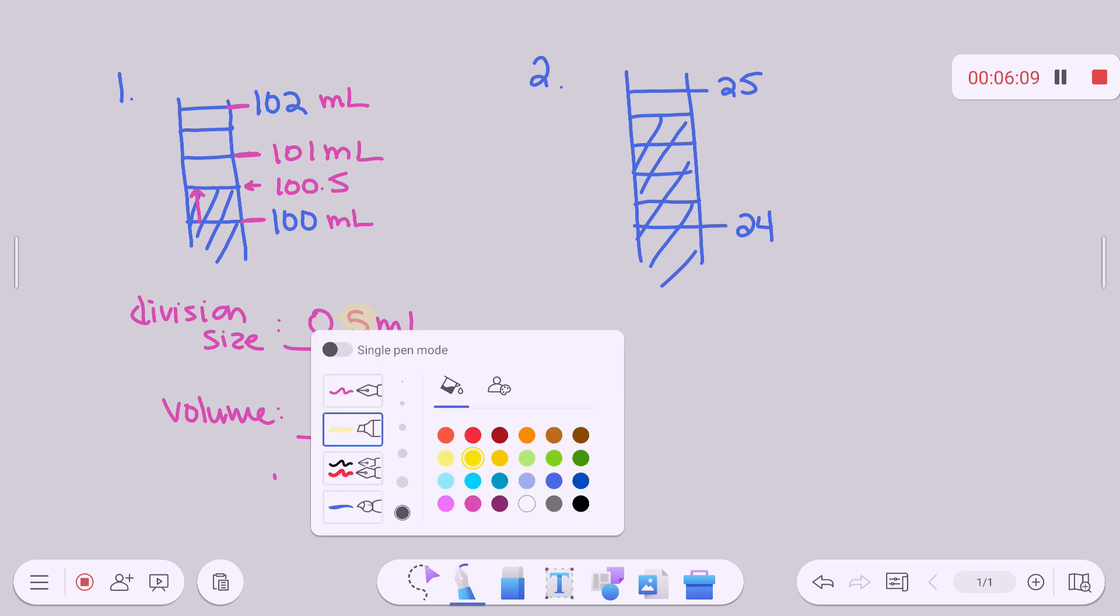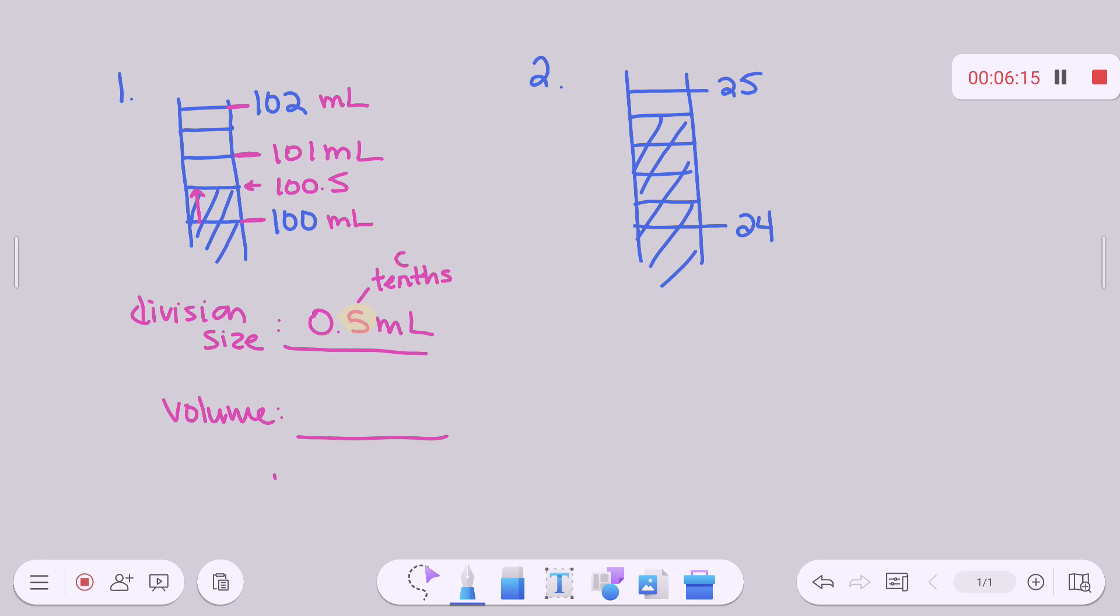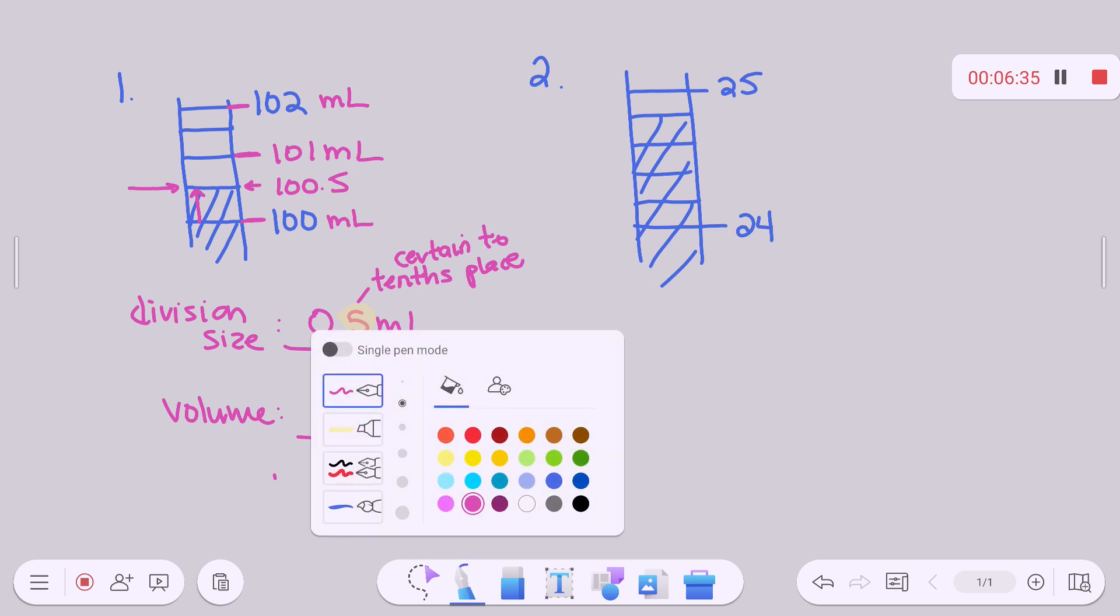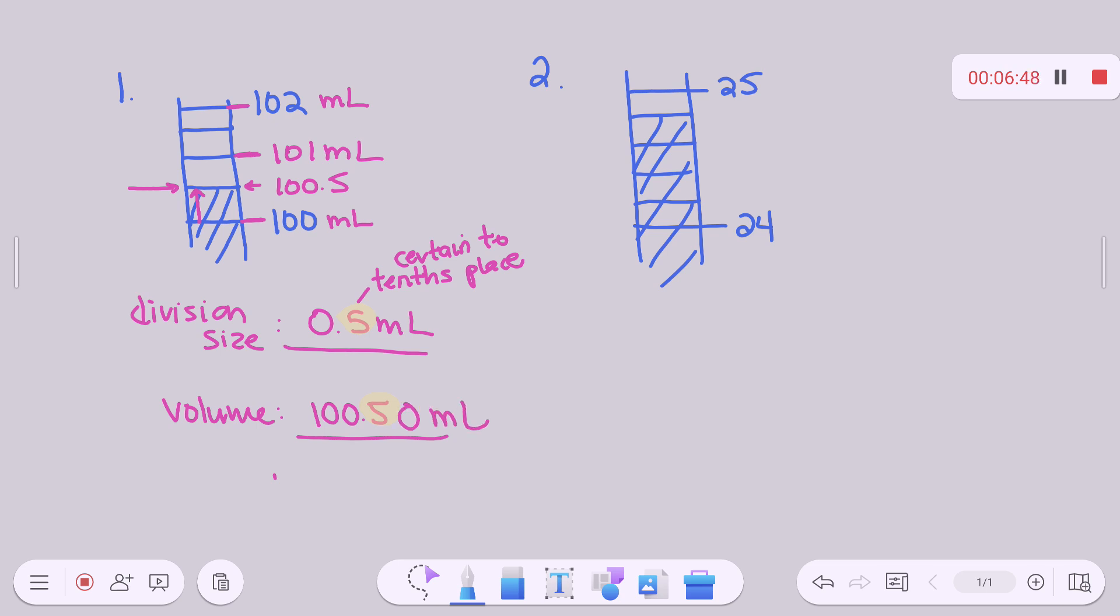So I am certain up to what decimal place? Tenth place, right? All right. So my volume goes up to this 100.5, agreed. That's where the shading goes. So my volume should be 100.5. And then what should I add after that as my estimated digit? Because you know that you are certain up to that place. I'm on the division. So what would I add? A zero. And now we're done. Makes sense.